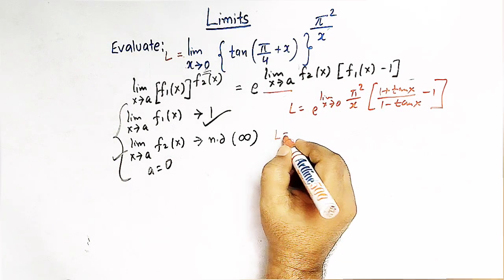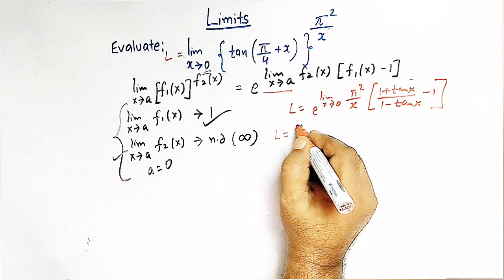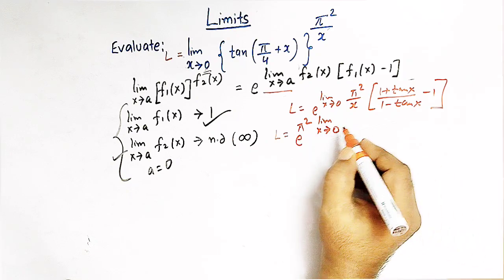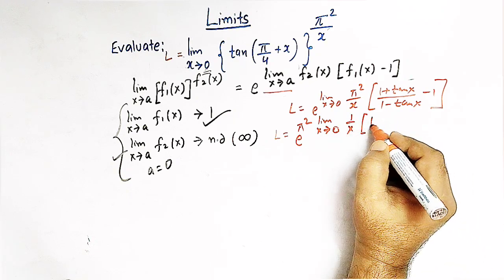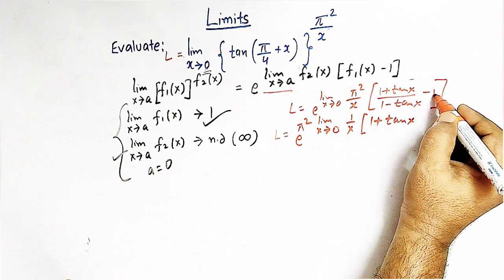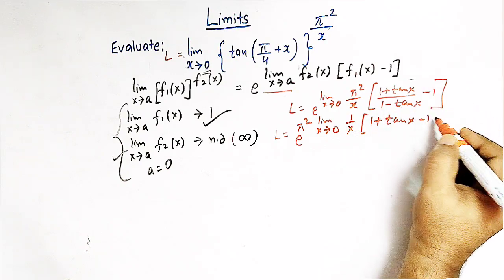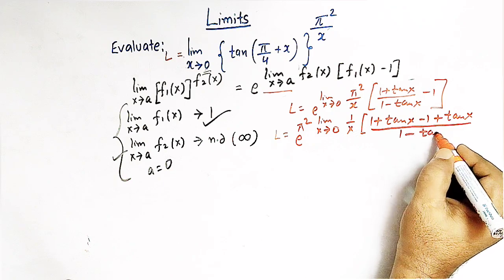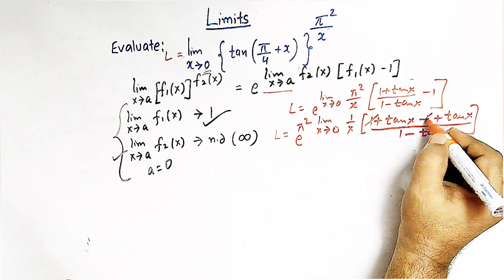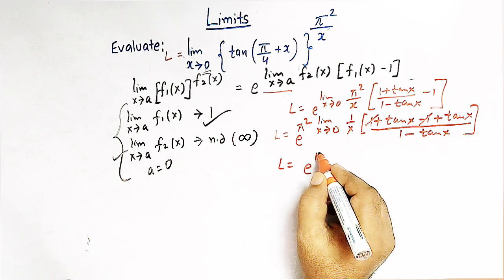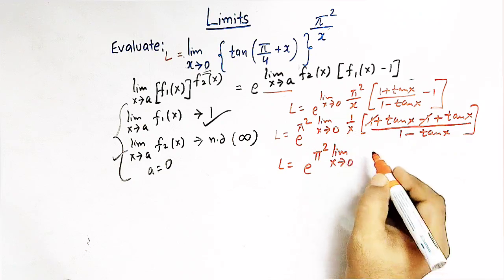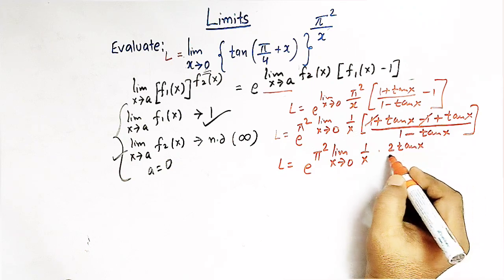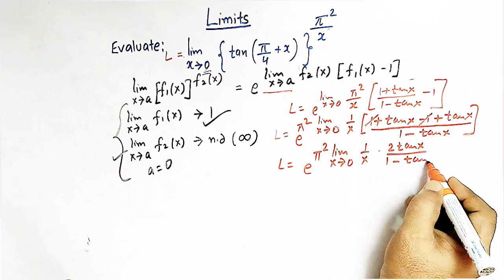So L = e raised to π² times limit x tends to 0 of (1/x) times [(1 + tan x)/(1 − tan x) − 1]. Multiplying out, the 1 and −1 cancel, leaving numerator tan x + tan x = 2 tan x, giving us e raised to π² times limit x tends to 0 of (1/x) times 2 tan x / (1 − tan x).